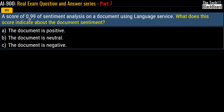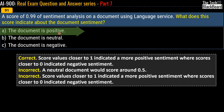Question 91: a score of 0.99 from sentiment analysis on a document using the language service — what does this score indicate? Options are positive, neutral, or negative. The correct answer is option A, positive. Score values closer to 1 indicate more positive sentiment, while scores closer to 0 indicate negative sentiment. Since 0.99 is extremely close to 1, the answer is positive. A neutral document would score around 0.5, so if Microsoft puts the score near 0.5, choose neutral.